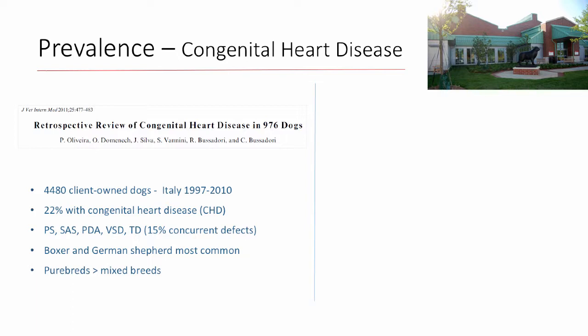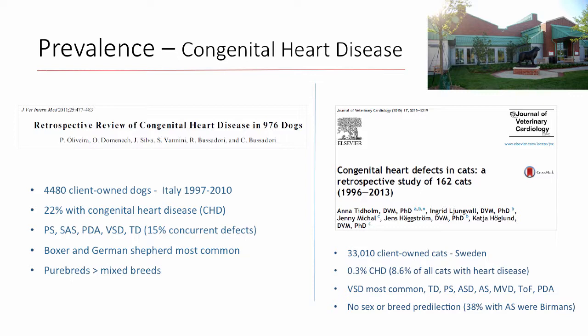Common diseases seen in that population included pulmonic stenosis, SAS, PDA, VSD, and tricuspid dysplasia. As you might expect, purebreds were over-represented compared to mixed breed dogs, with boxers and shepherds being commonly represented. Another study out of JVCI just two years ago looked at congenital heart disease in cats in a referral hospital population.